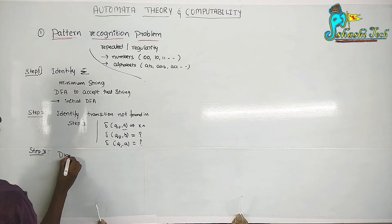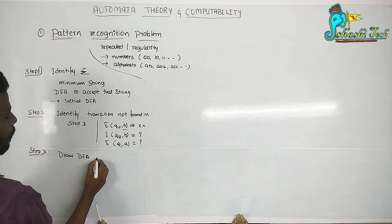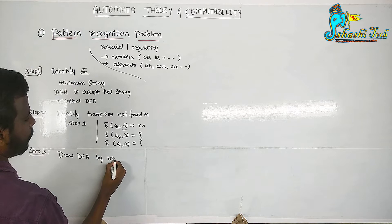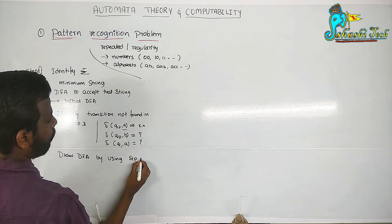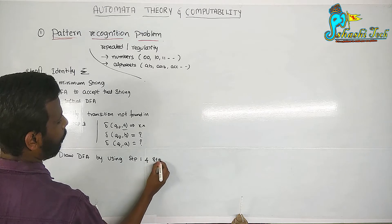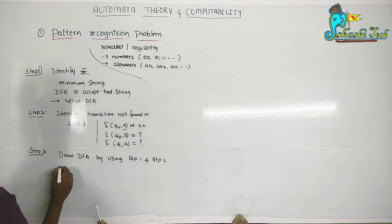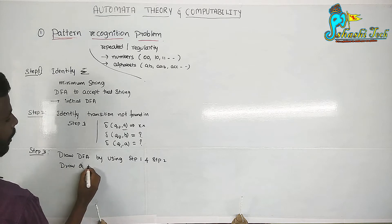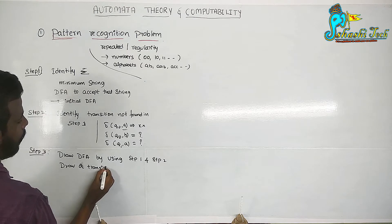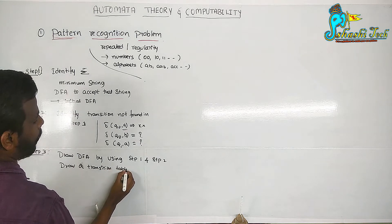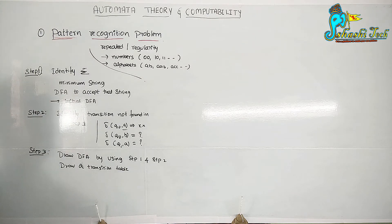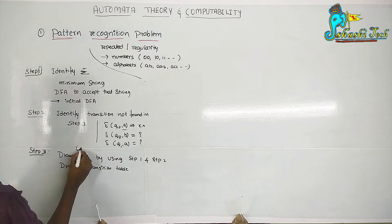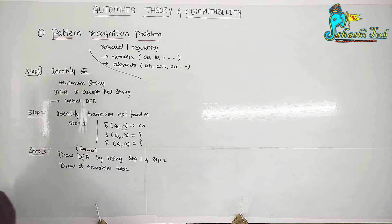Step three says: draw a DFA by using step one and step two, and also draw a transition table. This gives us the formal DFA. We shall see what the formal DFA looks like through an example.